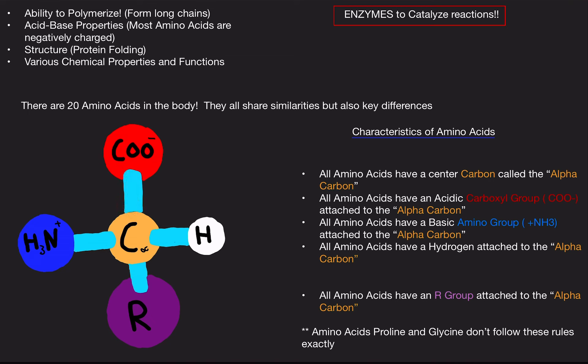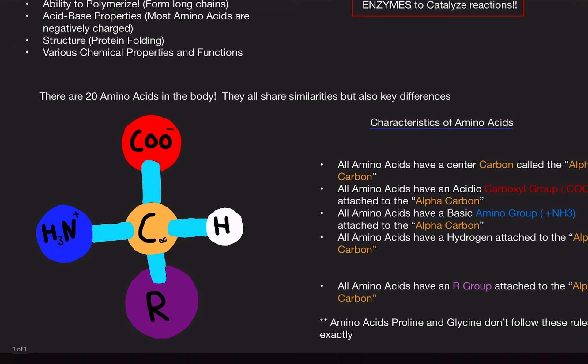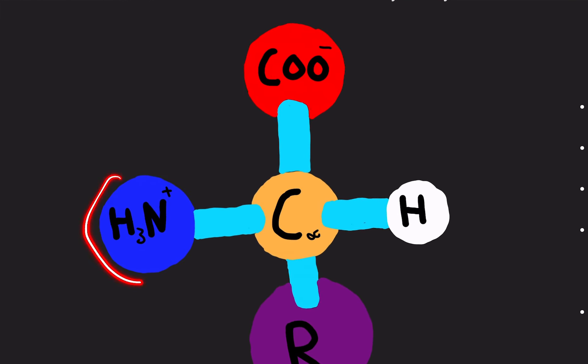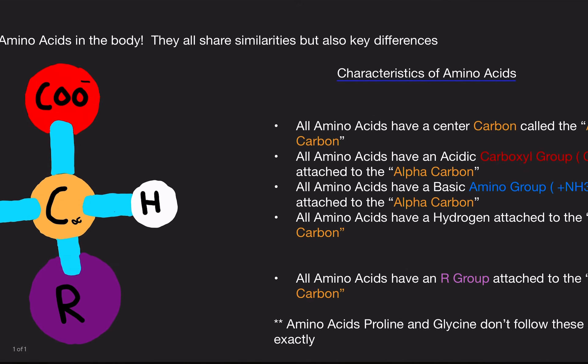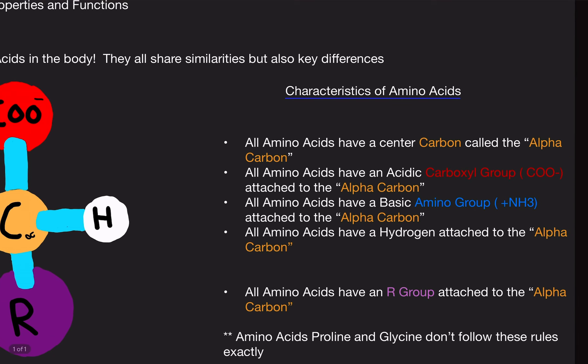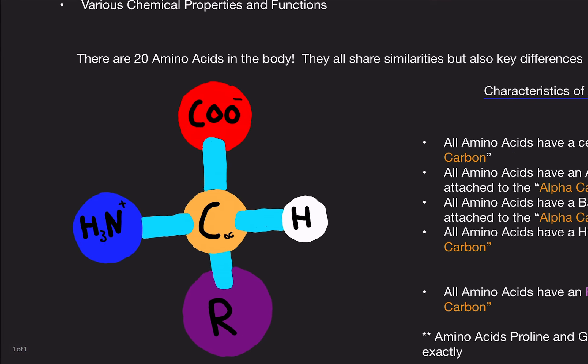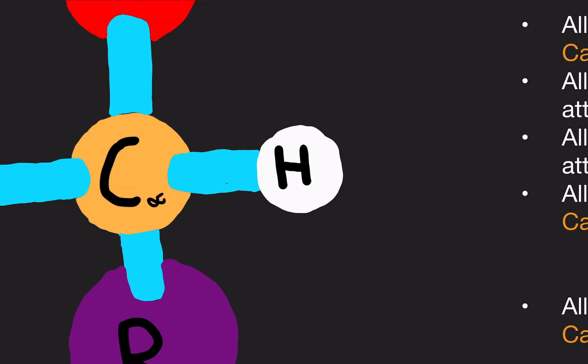So all amino acids also have a basic amino group, which is this guy right here. It's bound to the alpha carbon as well. So that's two things we covered that's bound to the alpha carbon. The third thing is that all amino acids have one hydrogen, at least one hydrogen bound to the alpha carbon. That's three things.